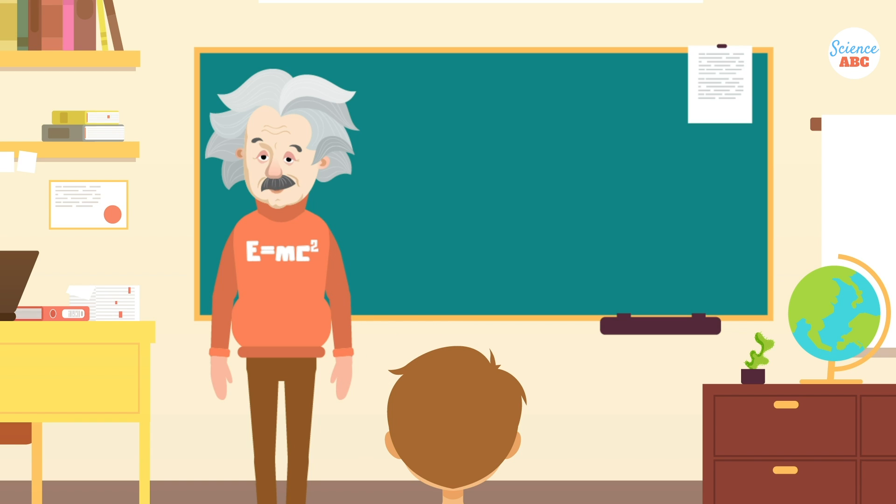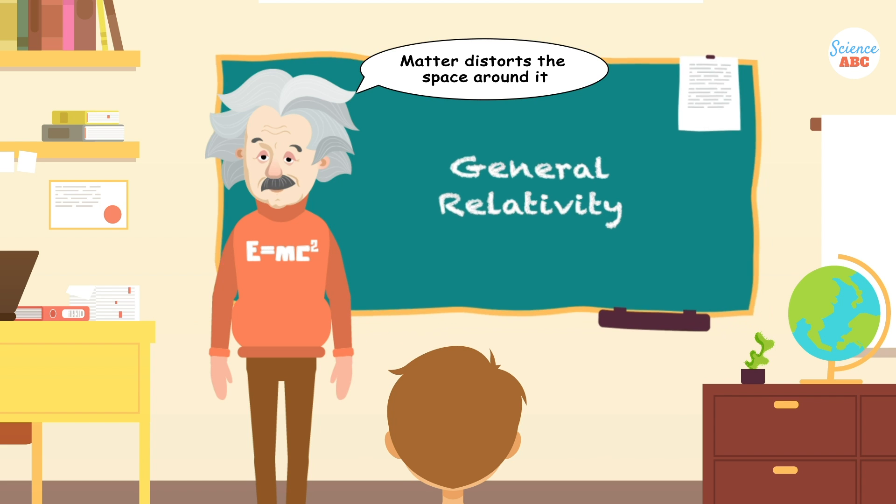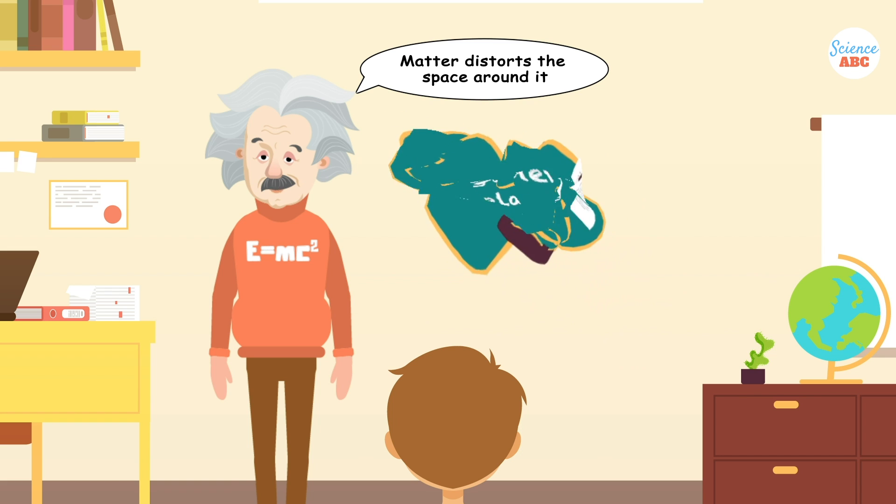In 1915, Einstein put forth his new theory of gravity called general relativity. Einstein suggested that matter distorts the fabric of space and time around it.